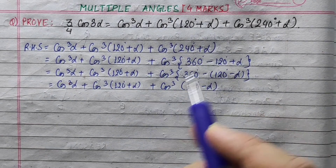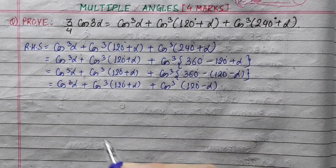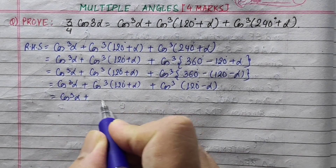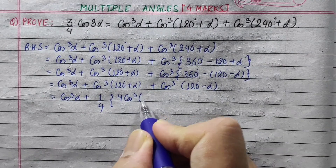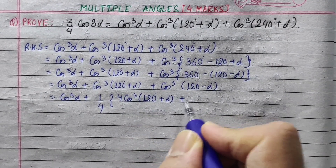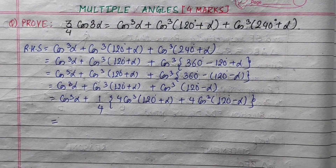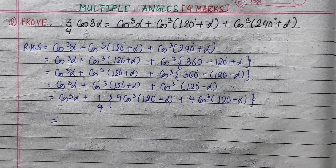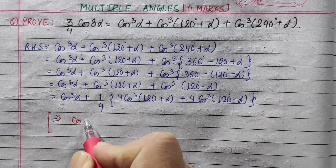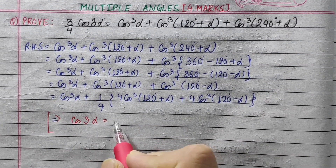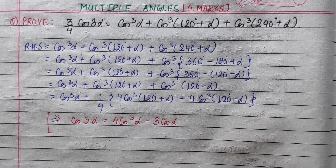I'm going to start with the cube. I will do the cube using the formula. So 1 by 4 into 4cos³α, plus 4cos³(120 plus α), plus 4cos³(120 minus α). The formula is: cos3α equals 4cos³α minus 3cosα.